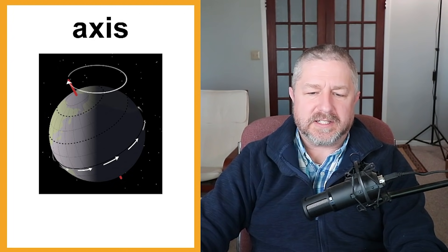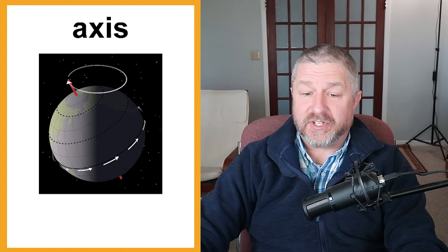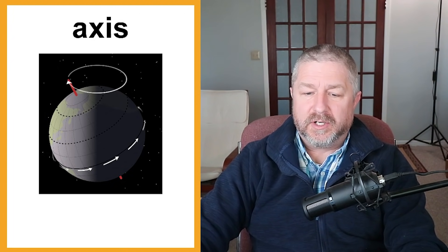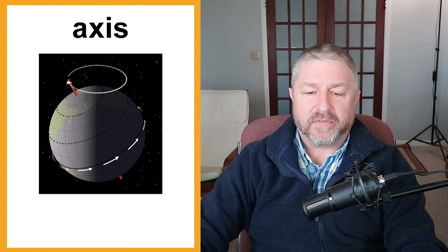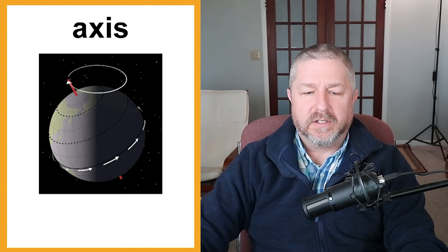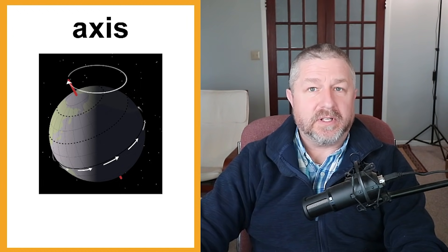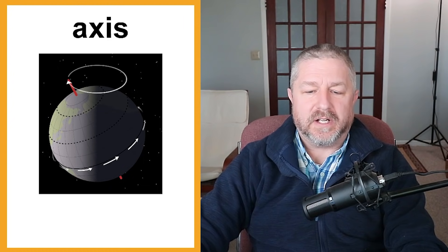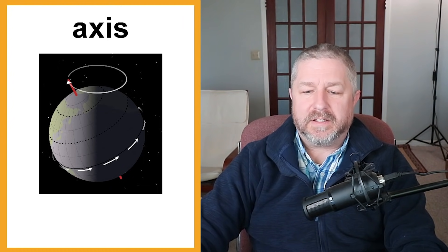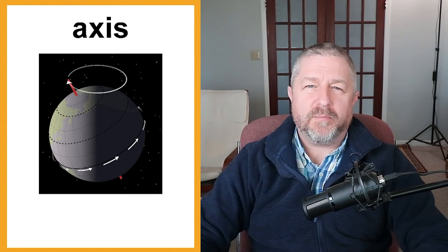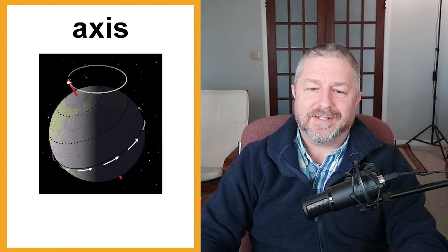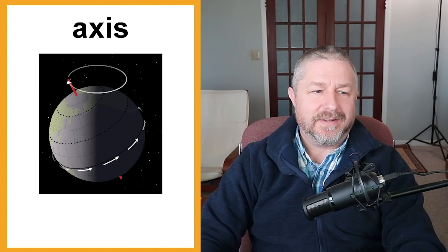Earth has seasons because its axis is tilted. Earth's axis is always pointed in the same direction, so different parts of the Earth get the sun's direct rays throughout the year. For example, in summer, the sun's rays hit that region more directly than any other time of year. A mini science lesson about the axis.